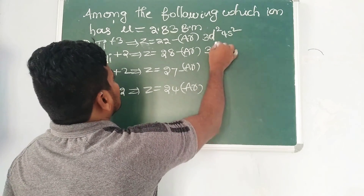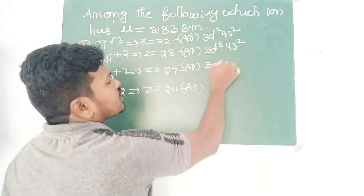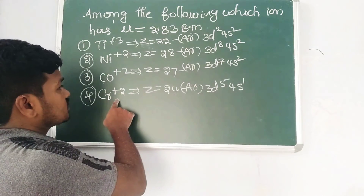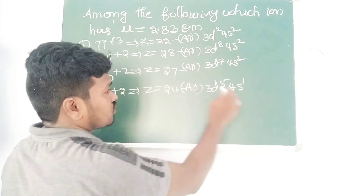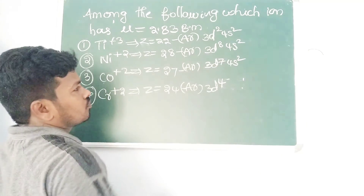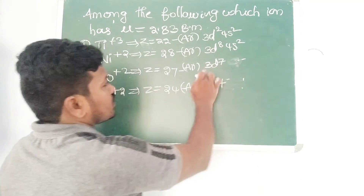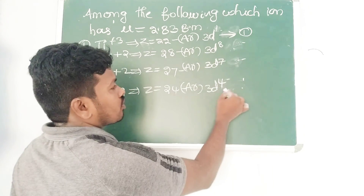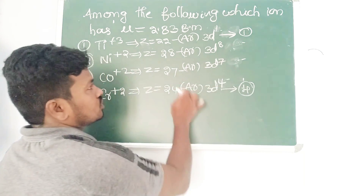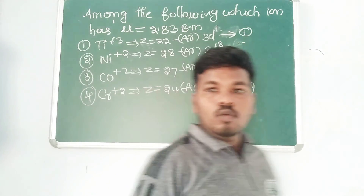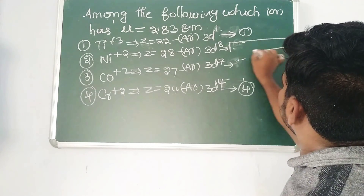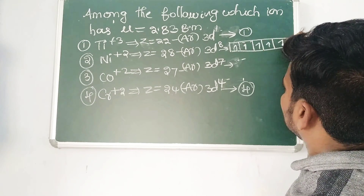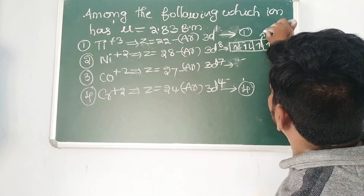The electronic configurations are: Ti is [Ar] 3d² 4s², Ni is [Ar] 3d⁸ 4s², Co is [Ar] 3d⁷ 4s², Mn is [Ar] 3d⁵ 4s², and Cr is [Ar] 3d⁴ 4s² (original). For Cr²⁺, removing two electrons gives 3d⁴; for Co²⁺, 3d⁷; for Ni²⁺, 3d⁸; for Ti³⁺, 3d¹. Ti³⁺ has one unpaired electron and Cr²⁺ has four — both are not correct. Now counting for 3d⁸: one, two — 3d⁸ has two unpaired electrons.